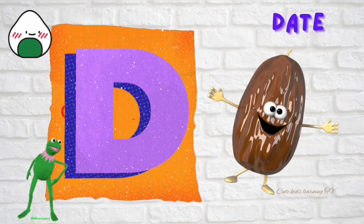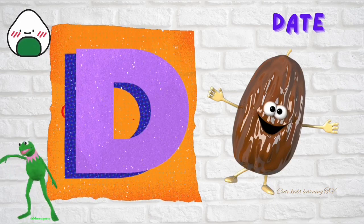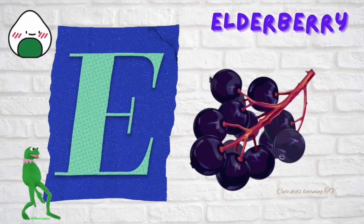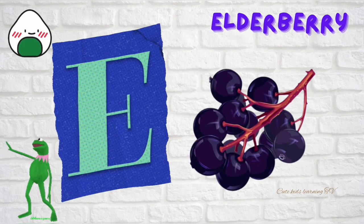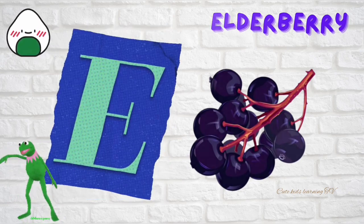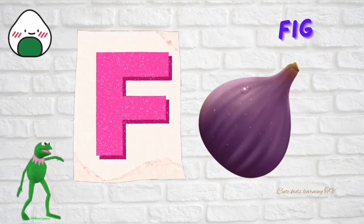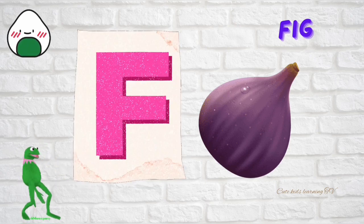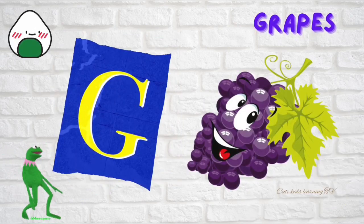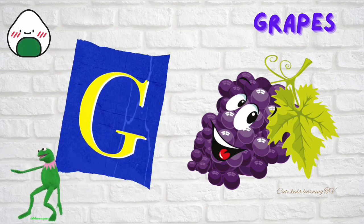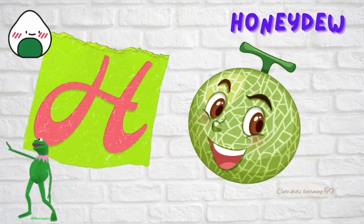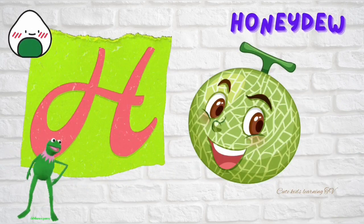D is for date. E is for elderberry. F is for fig. G is for grapes. H is for honeydew.